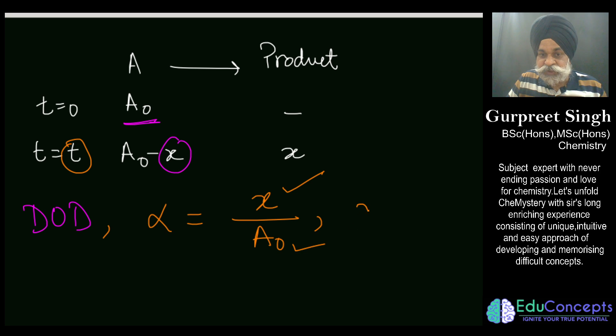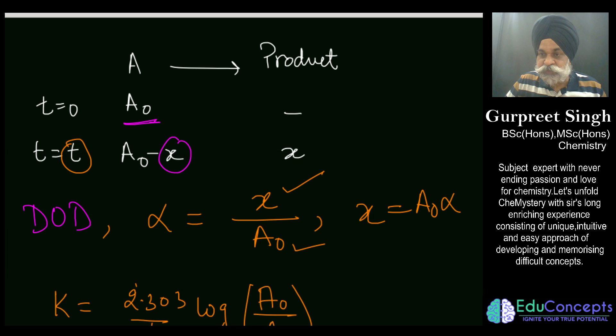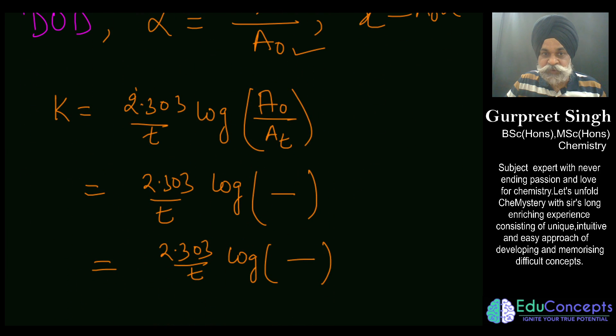Now to apply this into the integrated rate law, what we can do here is simple. This expression you people all know: that k is equal to 2.303 over t log A₀. So A₀ upon t can also be written as A₀ upon A₀ minus A₀ alpha.